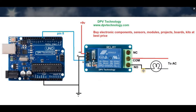On the other hand, if we connect the bulb to the normally closed pin, then the bulb will be in ON state without any microcontroller signal. So we can say this is a closed circuit pin — that is why this pin is called the normally closed pin. We can also turn off the bulb connected to the normally closed pin by sending a signal to the relay module.